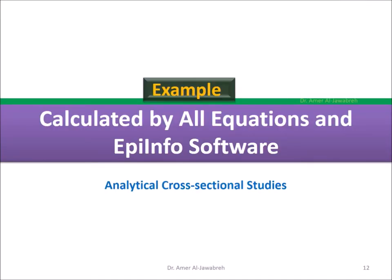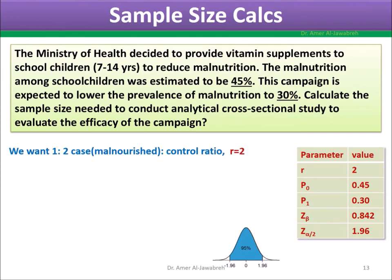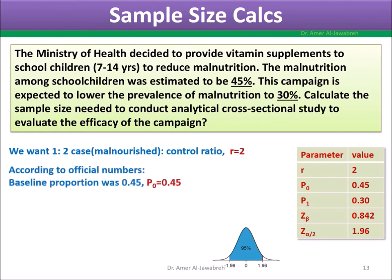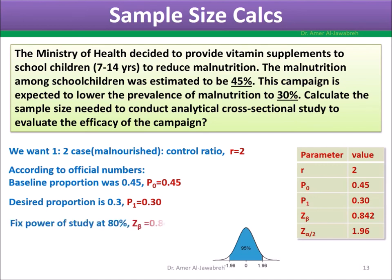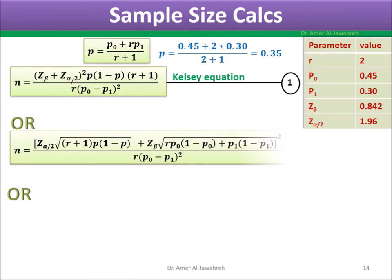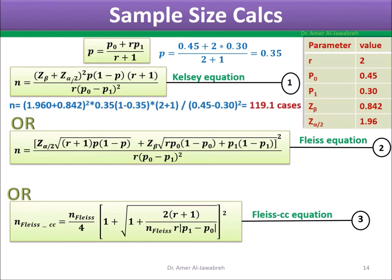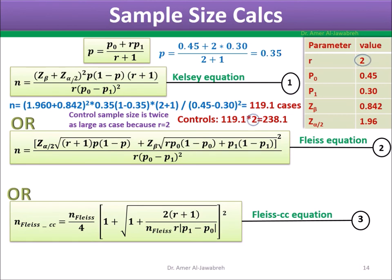An example calculated by all equations and epi-info software: First step is to assign the 5 variables — case-control ratio R equals 2, baseline prevalence is 45% (P0 = 0.45), desired prevalence is 30% (P1 = 0.3), power of the study is fixed at 80% (Zeta Beta = 0.84), and level of significance Zeta Alpha over 2 equals 1.96. Results from the Kelsey, Fleiss, and Fleiss corrected equations are compared — the Fleiss corrected equation yields a larger sample size than the others. The control sample size is twice as large as the case sample size because R equals 2.